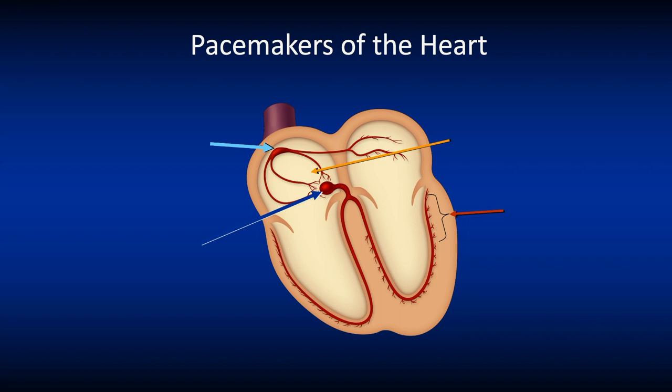So let's look at the pacemakers of the heart. The normal conduction system starts at the SA node. Your SA node fires at a rate of 60 to 100 beats per minute, and that's why your normal sinus rhythm rate is 60 to 100. If your SA node fails or is suppressed, an atrial pacemaker can kick in, firing at a rate of 60 to 80.